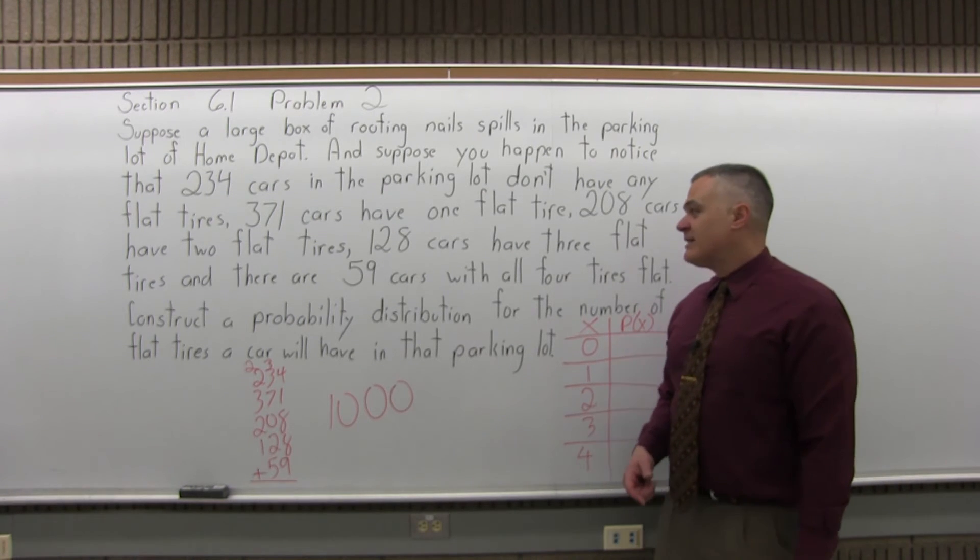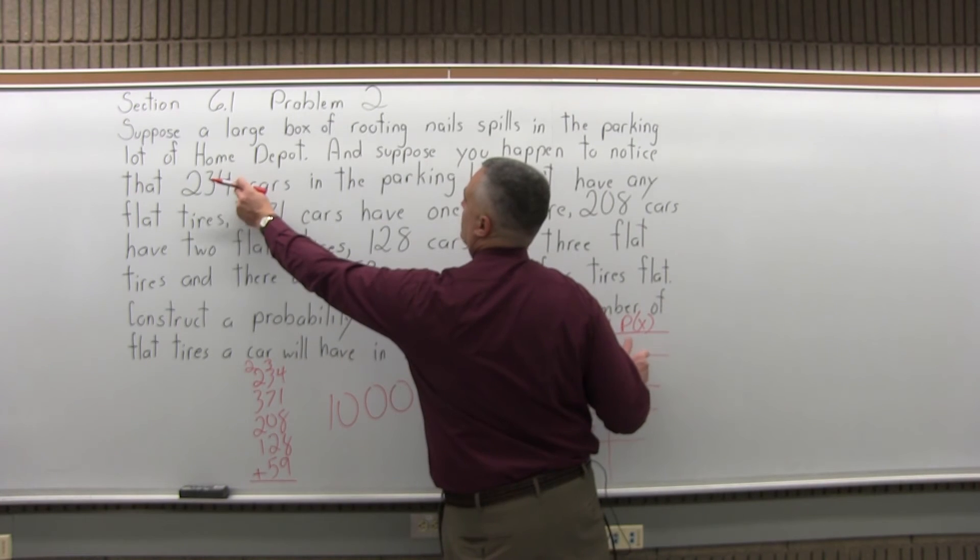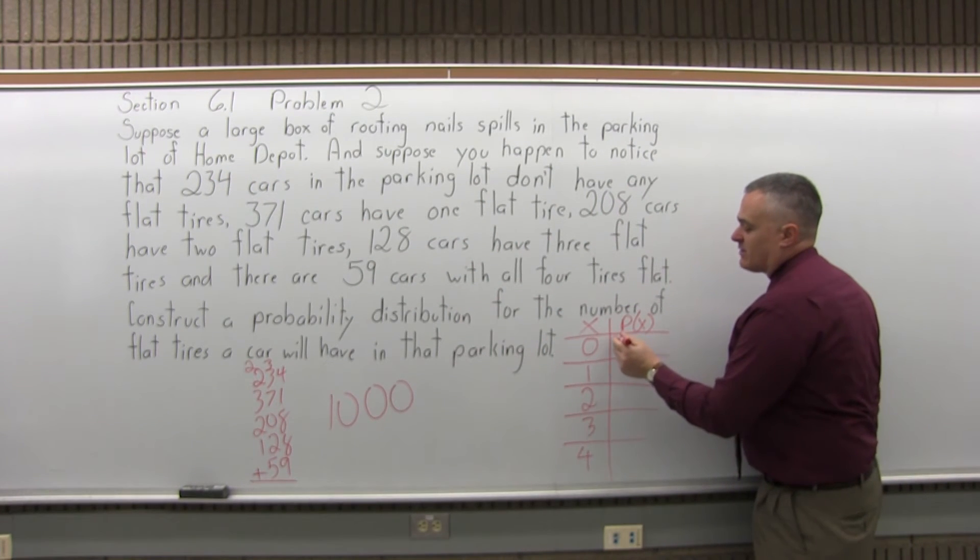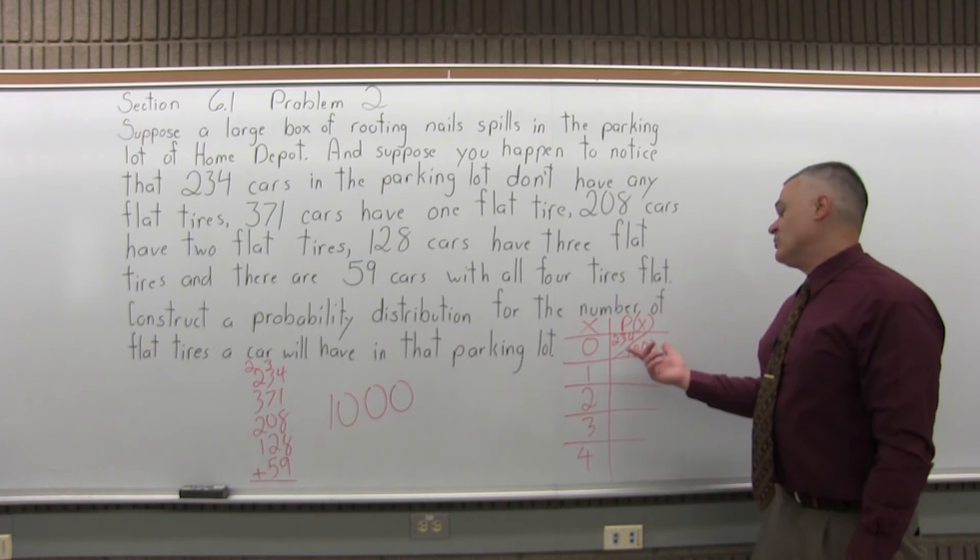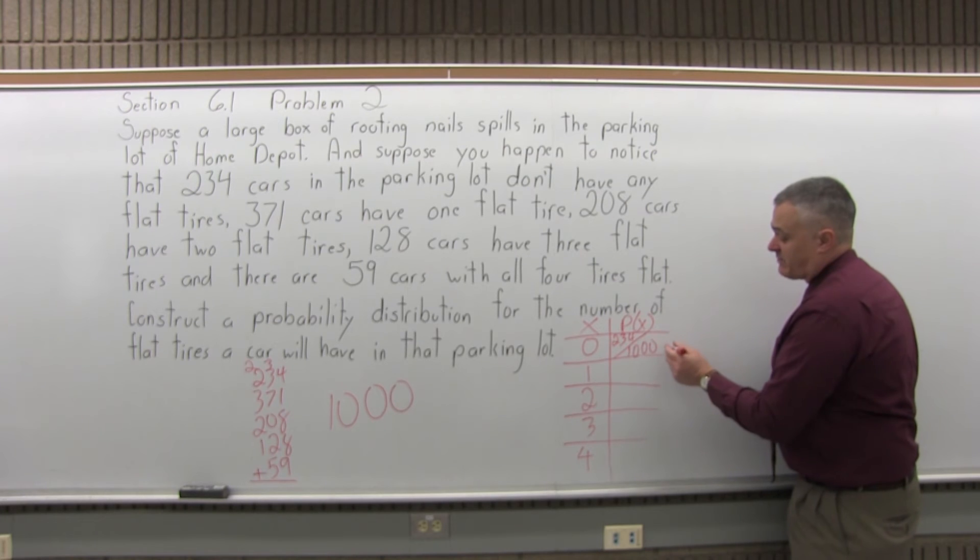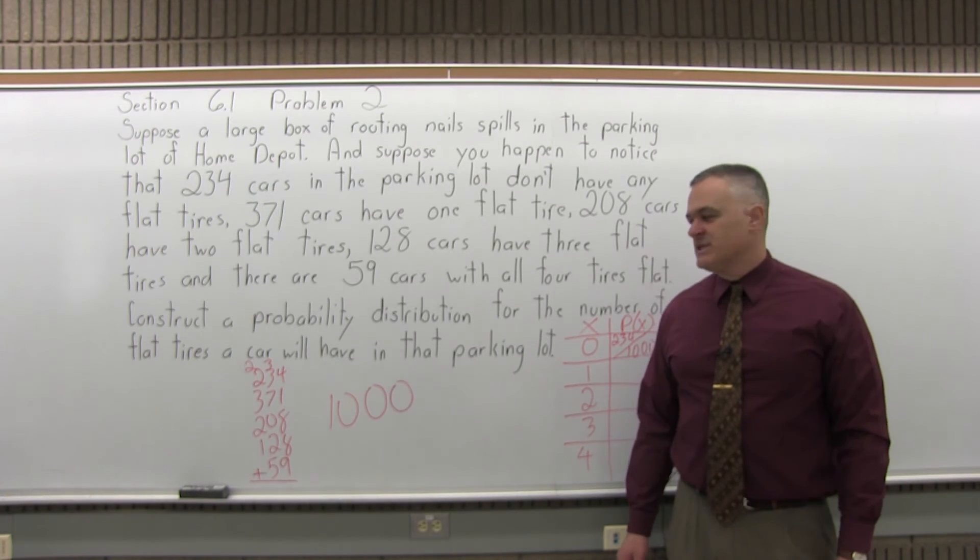Given that there's a total of 1,000 cars in the parking lot and 234 of those 1,000 cars didn't have any flat tires, the probability of having zero flat tires would be 234 over 1,000. If you prefer decimals as your answer, you could take a calculator and do 234 divided by 1,000 and you would get a probability of 0.234 or about 23%.